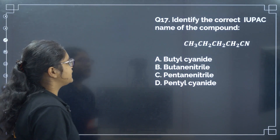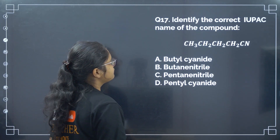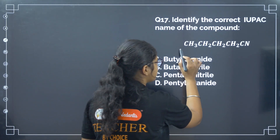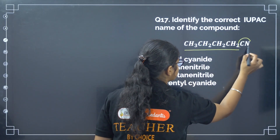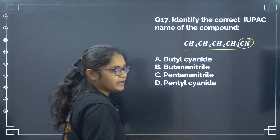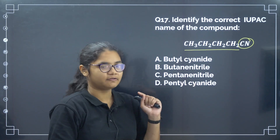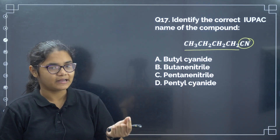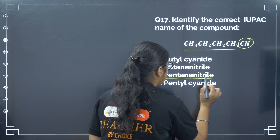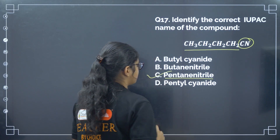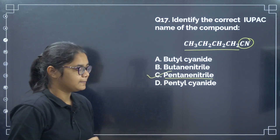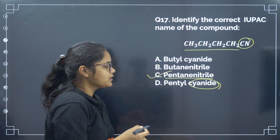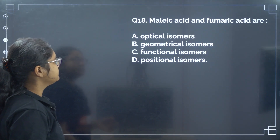Next: identify the IUPAC name of the following compound. This compound is tricky because a nitrile group is present. There are 5 carbons and the functional group is nitrile, so it is pentanenitrile. Correct answer is option number C. Do not mark cyanide — that is the common name.